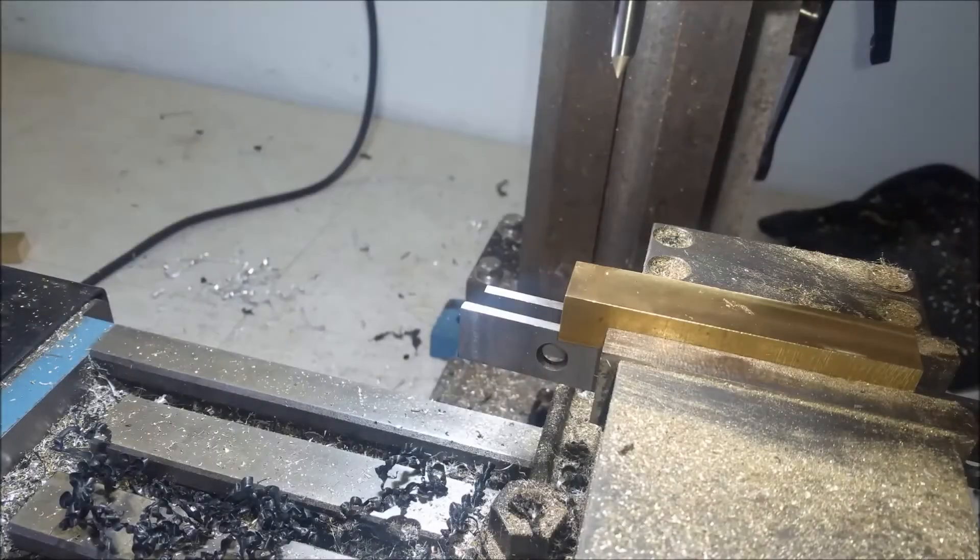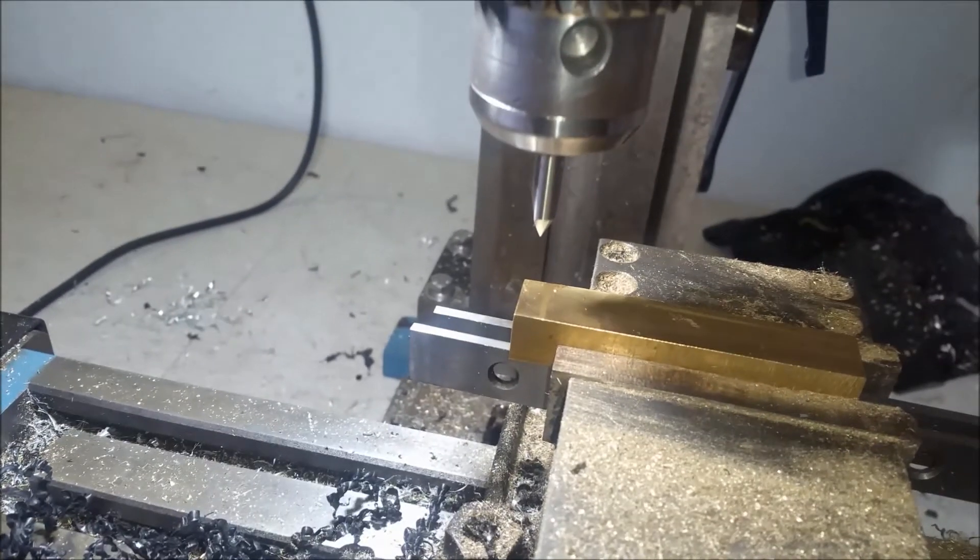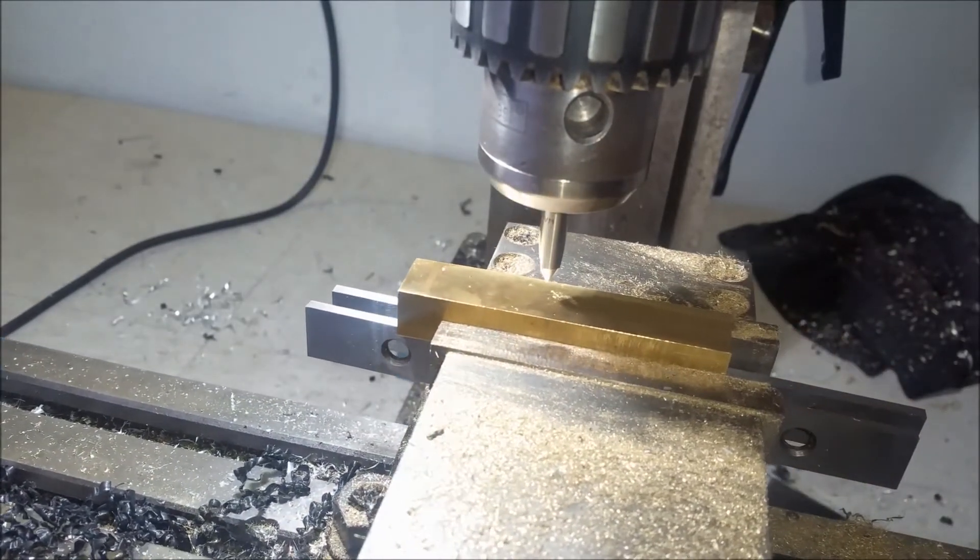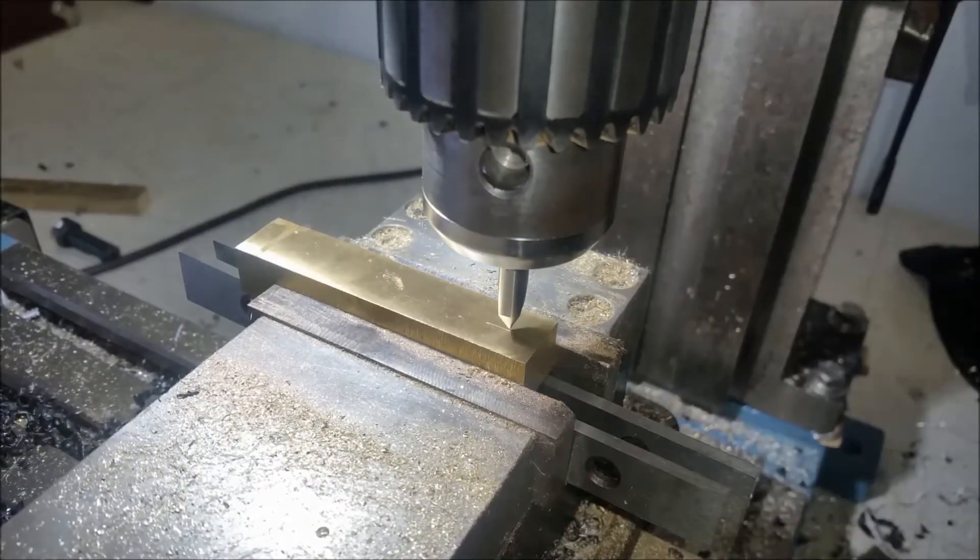Now that we have completed truing up the brass, I am going to be drilling a hole for the crankshaft. I am using this 60-degree bit here to line up perfectly for the center of the hole. Then I will change it out to a drill bit.